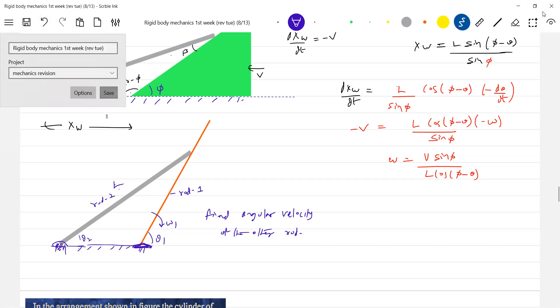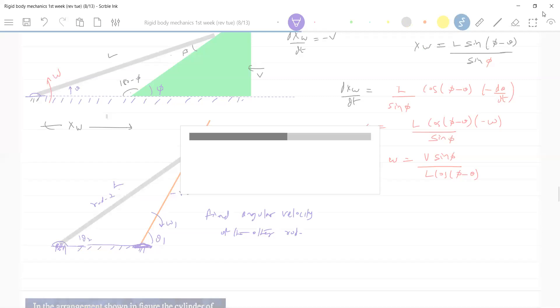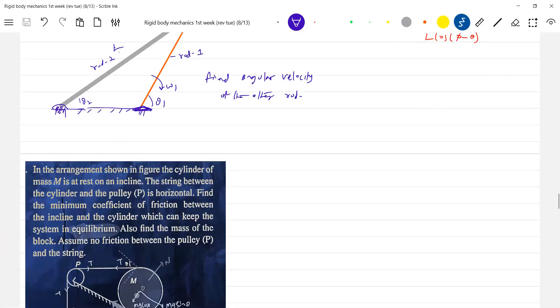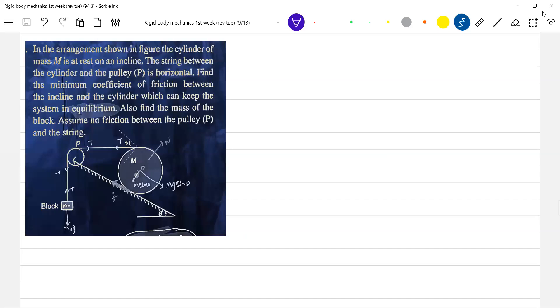Velocity along common normal, sine rule or cosine rule, or any constraint equations if you want to bring constraint equations. Take the next one.